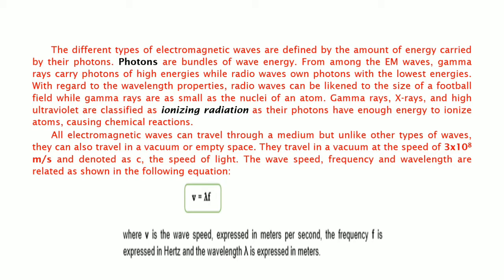They travel in a vacuum at the speed of 3 times 10 to the 8th power meters per second and denoted as c, the speed of light. The wave speed, frequency, and wavelength are related as shown in the following equation: v equals wavelength multiplied by frequency, where v is the wave speed expressed in meters per second, the frequency is expressed in hertz, and the wavelength is expressed in meters.